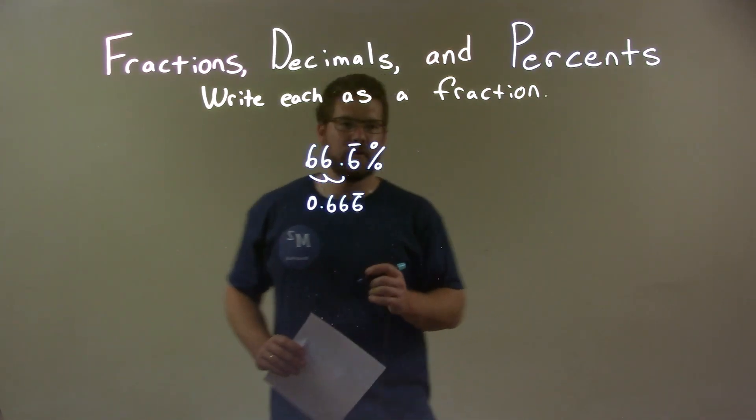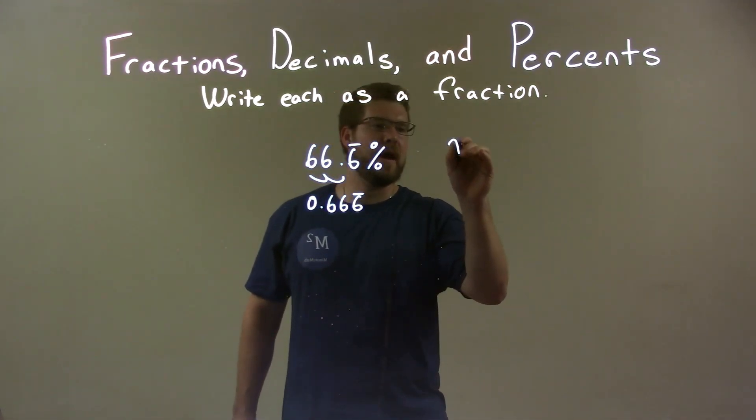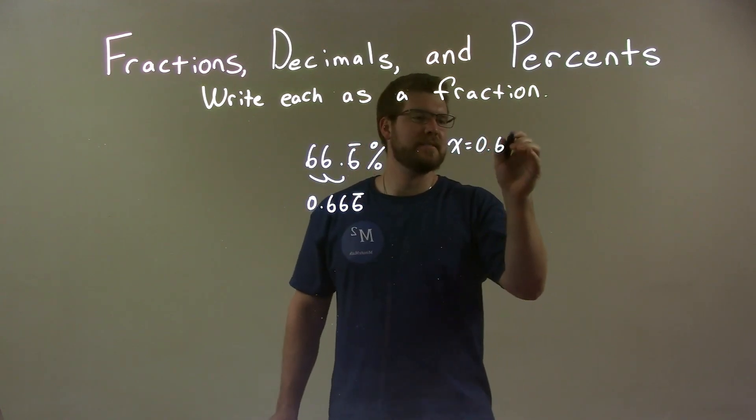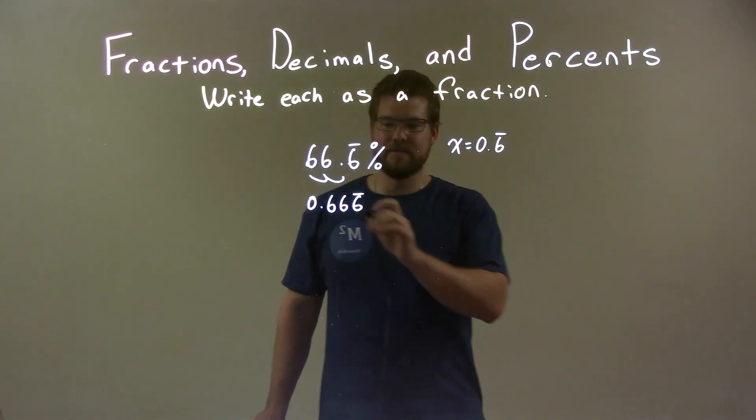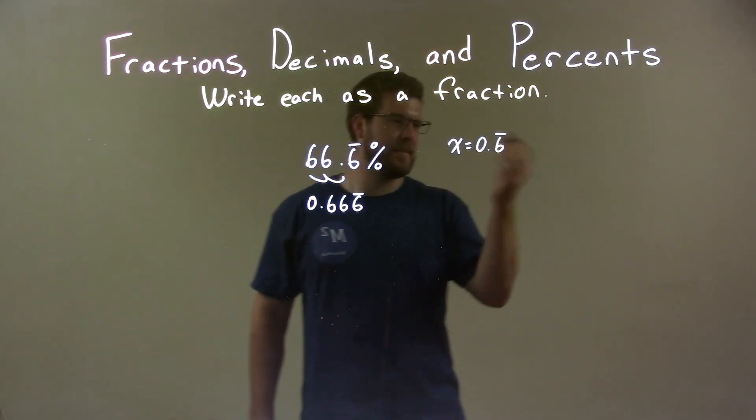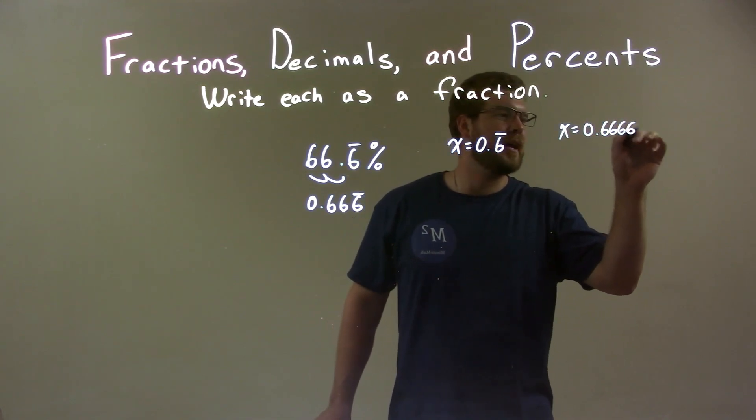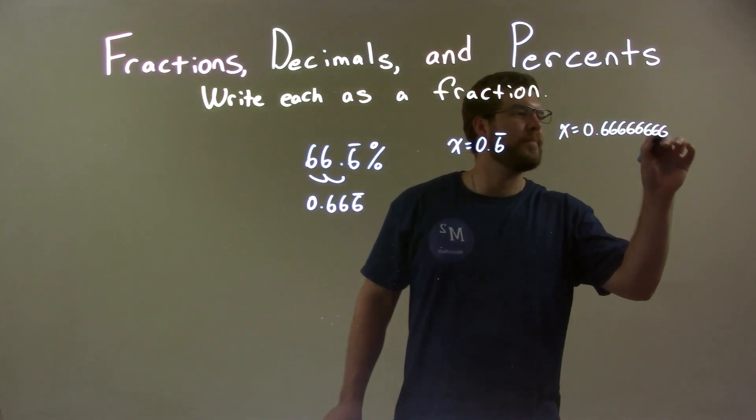All right, so what I'm going to do is let this equal x. I'm going to say x equals 0.6 repeating, like 0.66666, the same thing as 6 repeating. I keep writing that until the cows come home. It goes on forever.